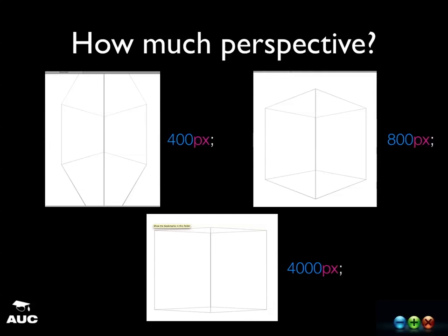How much perspective should we give it? We just need to play around with some numbers. Anything between 800 to 1200 seemed okay for my demos. Too low and you get that really weird fisheye look. Too high and it looks flat, and you lose the 3D effect.